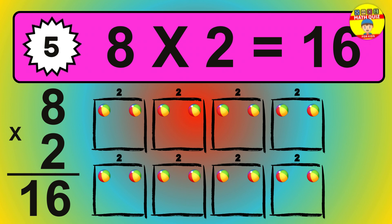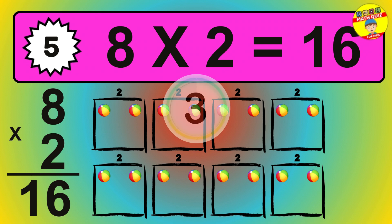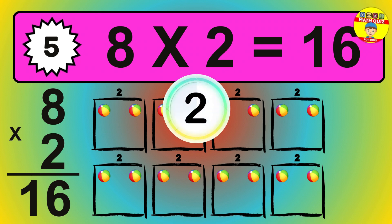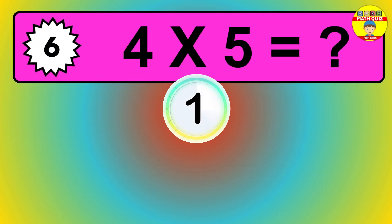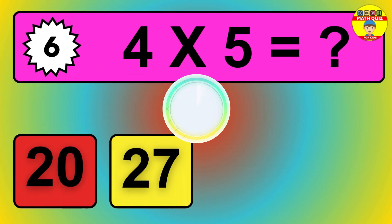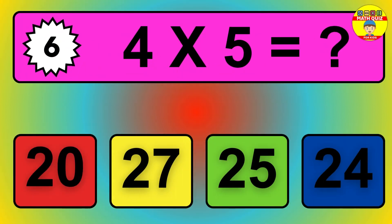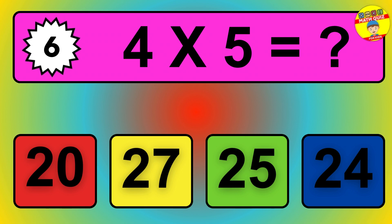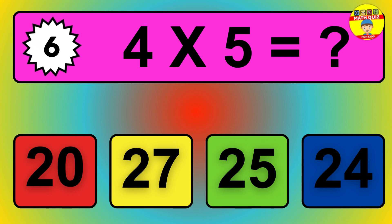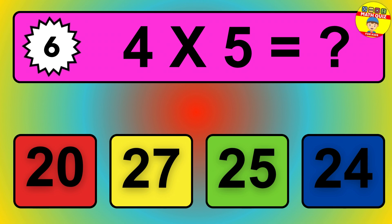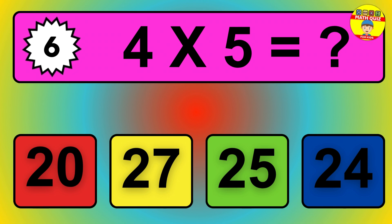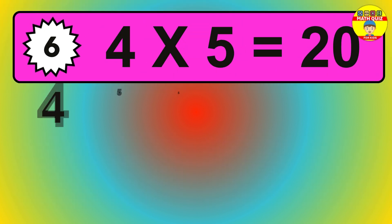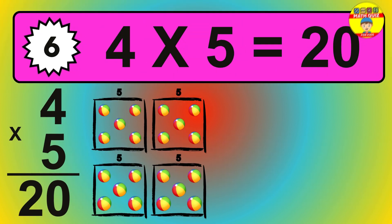Question 7. 5 times 5 equals what? The answer is 5 times 5 is 25. To calculate, we have 5 groups with 5 balls each one. So, how many balls do we have? 25 balls.